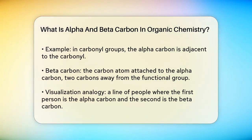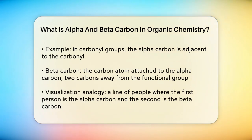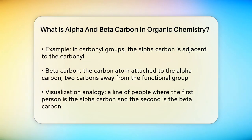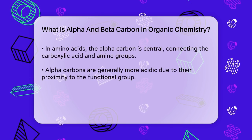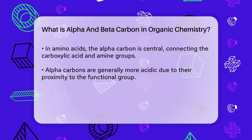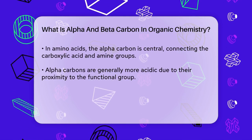Here's a simple way to visualize it. Imagine a chain of carbon atoms like a line of people. If the first person in the line is holding a special badge — the functional group — that person is the alpha carbon. The next person in line, who is right behind the first person, is the beta carbon.